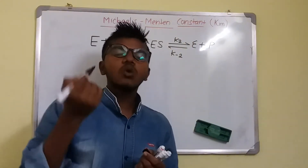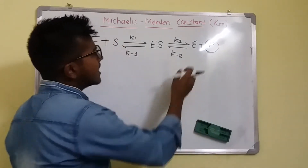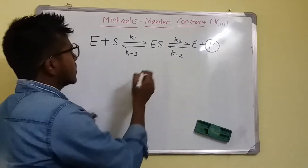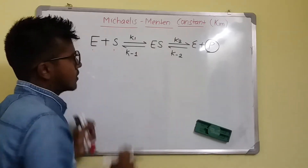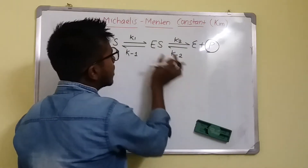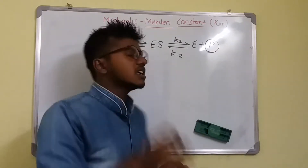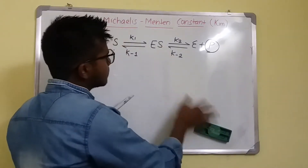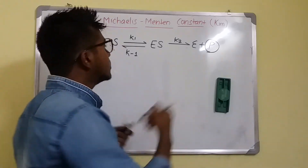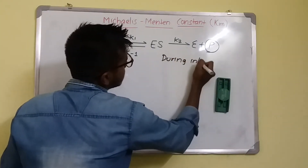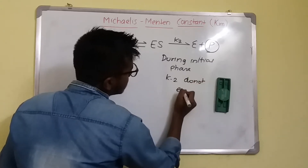Michaelis thought that during the initial phase of the reaction, the product is so much less that it will not again form the enzyme-substrate complex. This means enzyme and substrate will form the enzyme-substrate complex, and this can also dissociate back into enzyme and substrate. This can form E plus P, and E plus P can also form E and S. But during the initial phase of reaction, the concentration of product is so much less that this reverse reaction is not possible. So K-2 during the initial phase of reaction does not exist.